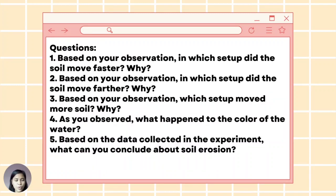And let us watch the video about that activity. Now let us answer some questions. Number one: Based on your observation, in which setup did the soil move faster and why? Number two: Based on your observation, in which setup did the soil move farther and why? And number three: Based on your observation, which setup moved more soil and why? And for number four: As you observed, what happened to the color of the water? And number five: Based on the data collected in this experiment, what can you conclude about soil erosion?